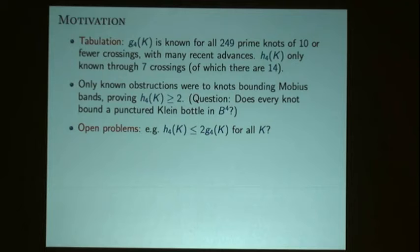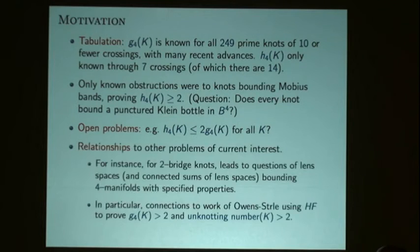There would be knots that don't bound Klein bottles. Earlier there was the observation that the non-orientable four-genus was less than twice the orientable genus plus one, but we know nothing about a stronger inequality. And what attracted me to it was that it turns out to be closely related to lots of other problems.